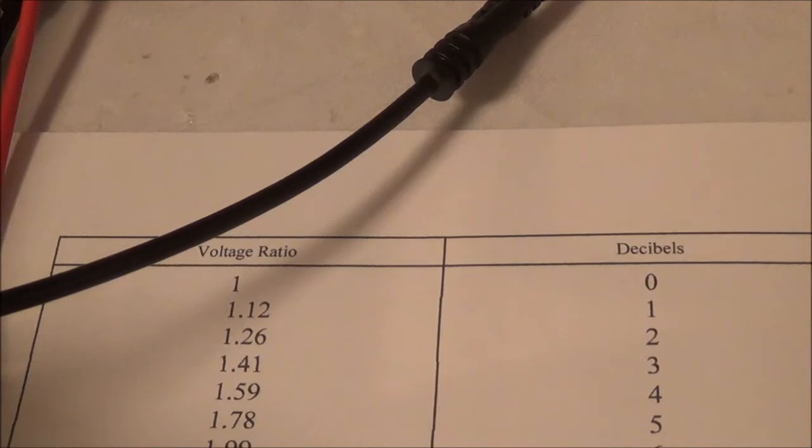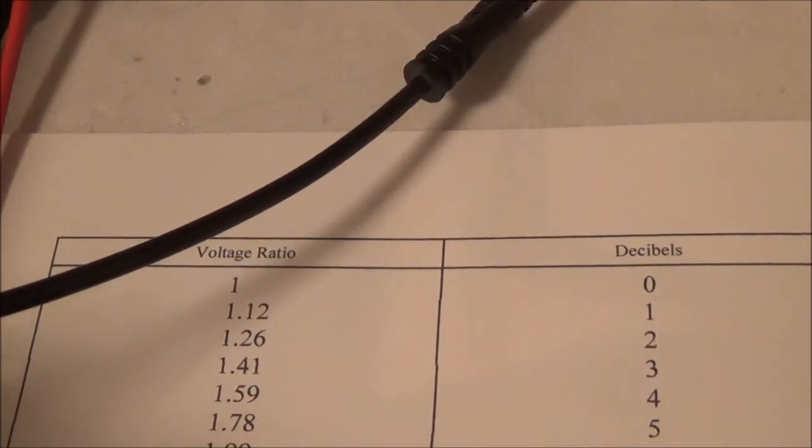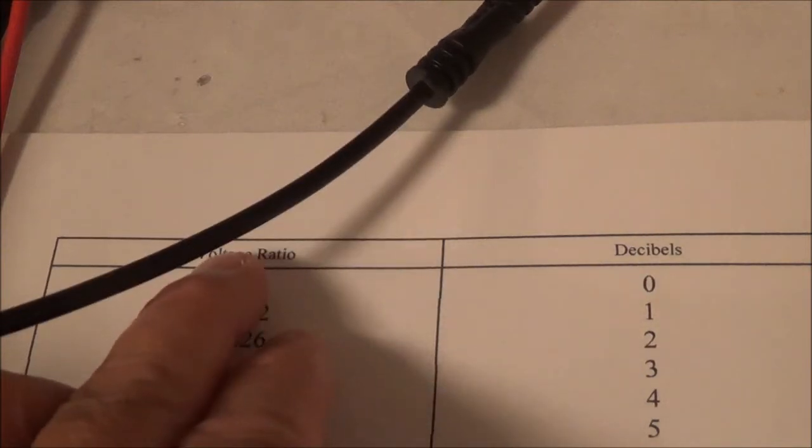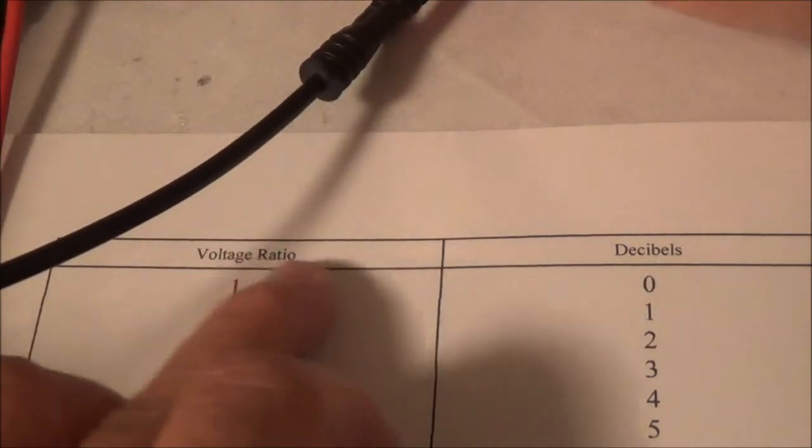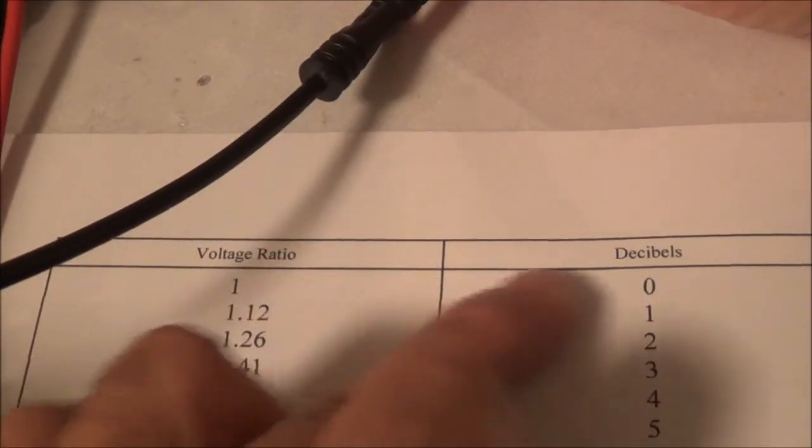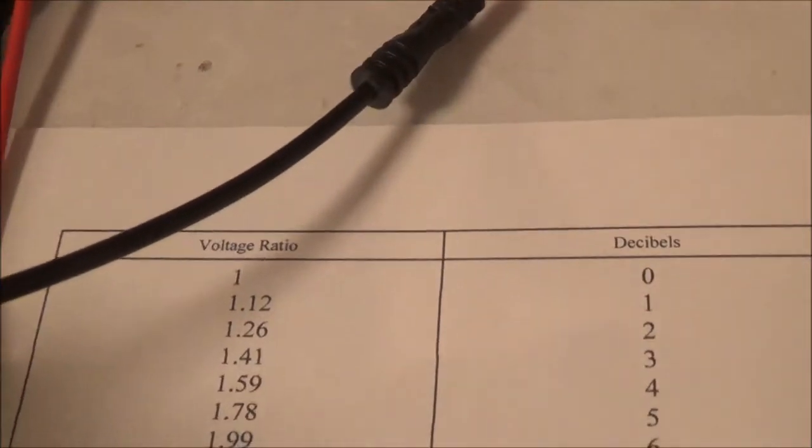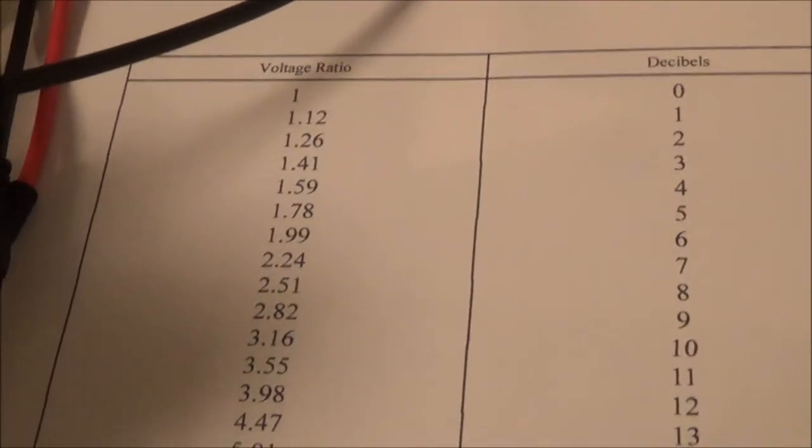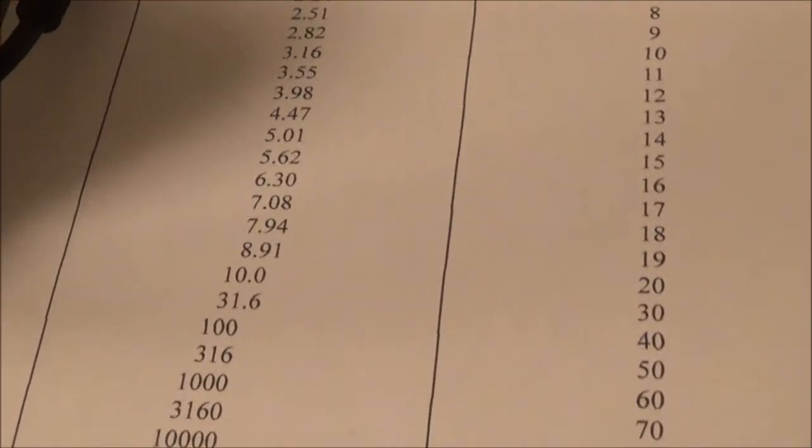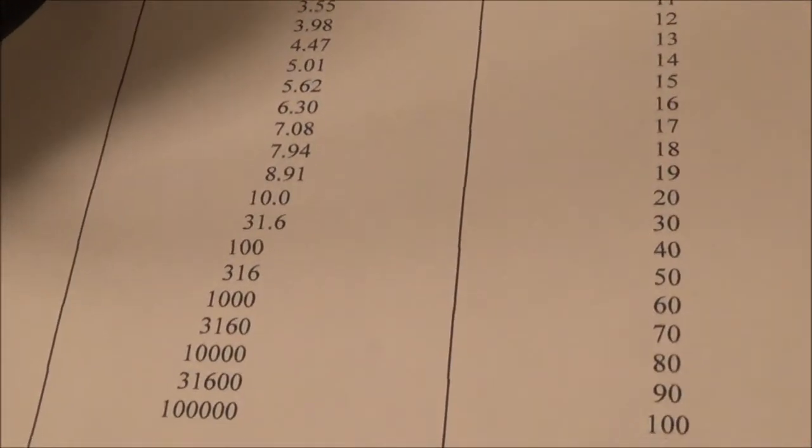So now to do the calculation, I'm going to use a chart - of course it would be easier and more exact if I went online. In the left column I have voltage ratio, on the right I have decibels, and I took this all the way down to 100 decibels.